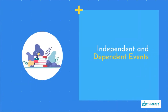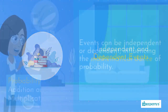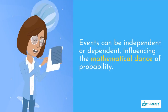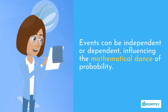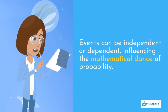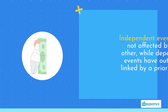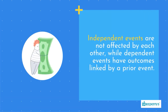Independent and Dependent Events. Events can be independent or dependent, influencing the mathematical dance of probability. Independent events are not affected by each other, while dependent events have outcomes linked by a prior event.